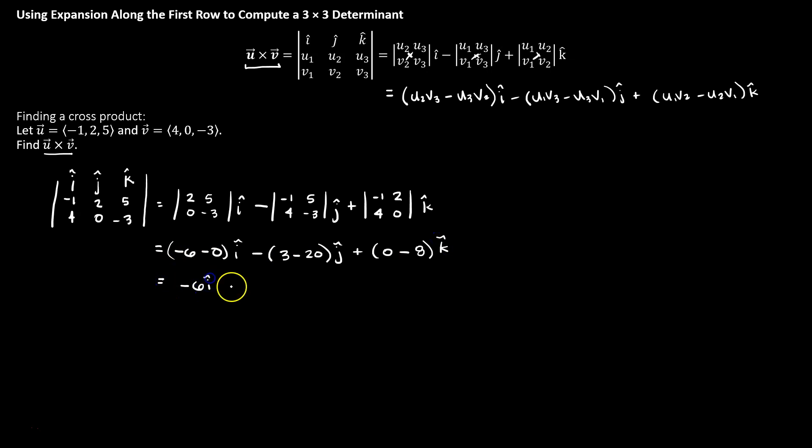And we're almost done here, we get -6i hat, we have 3 minus 20, that's the same thing as -17, but -17 with another minus becomes positive 17.